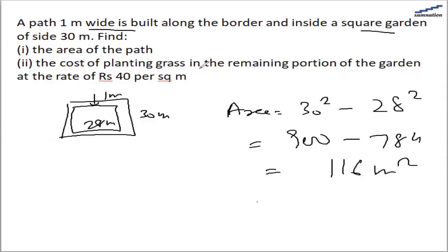We also need to find out the cost of planting grass in the remaining portion of the garden. So the remaining portion will be the inner square of the garden at the rate of 40 per meter square.